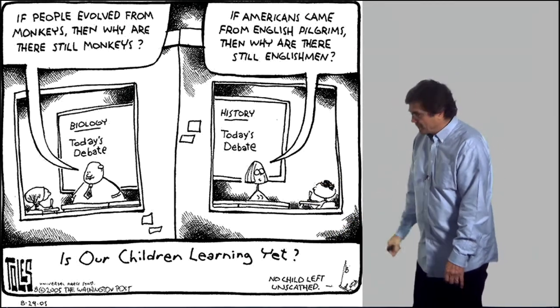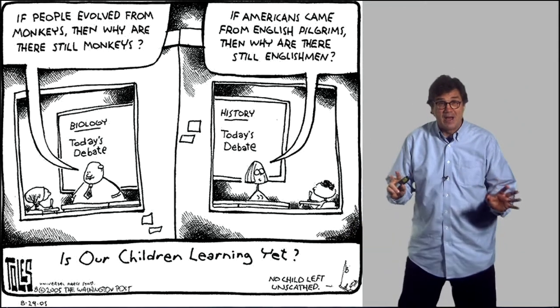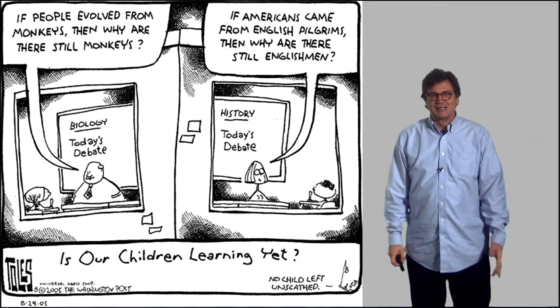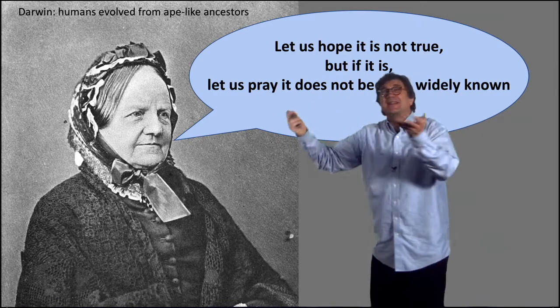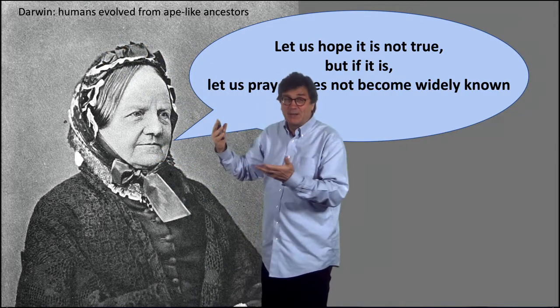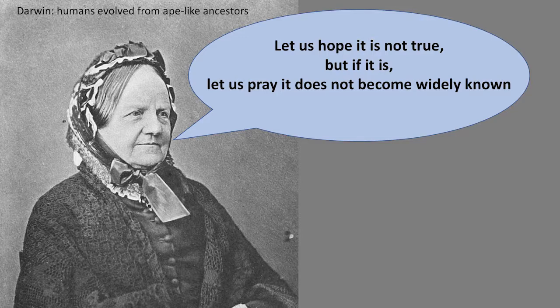And this is a cartoon from the Washington Post during the No Child Left Behind movement of George Bush, here's No Child Left unscathed by such ridiculous ideas. But why are they ridiculous? Well in 1859 Darwin came out with the origin of species and the main idea was that humans evolved from ape-like ancestors. And Victorian women of all kinds when they heard this said let us hope it is not true but if it is let us pray it does not become widely known. And so I'm here to help make it widely known.